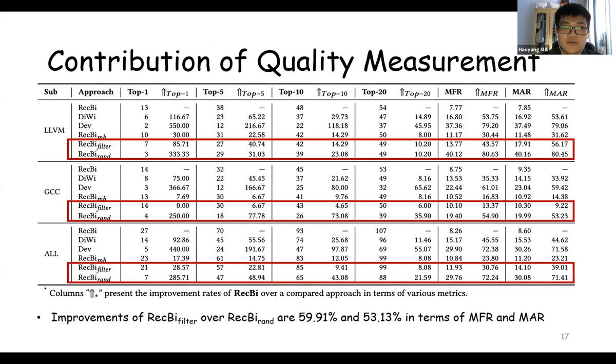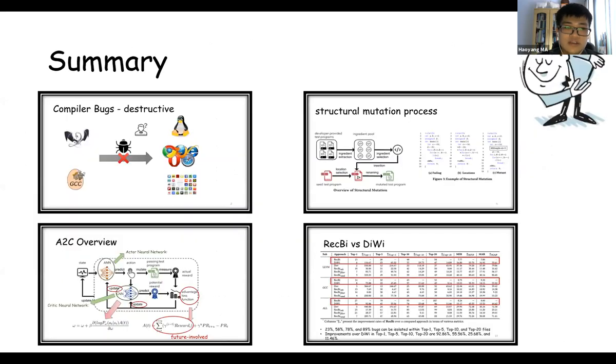Finally, is our contribution of quality measurement. We compare Rugby Filter and Rugby RAND. The only difference between these two techniques is Rugby Filter has a quality measurement, but Rugby RAND does not. The improvement shows the advantage of this quality measurement. Here's our summary. We first talk about compiler bugs and their destructive effects. Then we mention our structural mutation strategy and our reinforcement learning algorithm called A2C. Finally, by comparing Rugby and Divi, we can show that our technique is more efficient than the state-of-the-art bug isolation technique. That's all. Thank you all for listening.